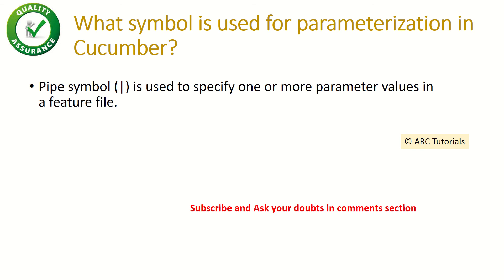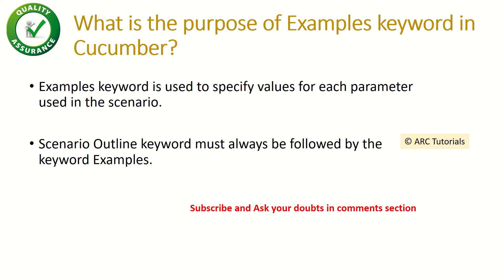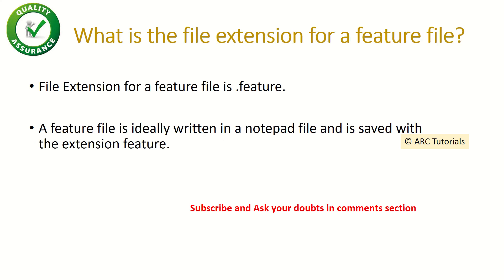What symbol is used for parameterization in cucumber? To pass parameters we use the 'examples' keyword, through which we pass the data. The values are separated using the pipe operator. What is the purpose of the examples keyword? Examples is used to parameterize values — if you want to execute steps with different data sets, we use examples, pass the values directly, and separate them using the pipe operator.